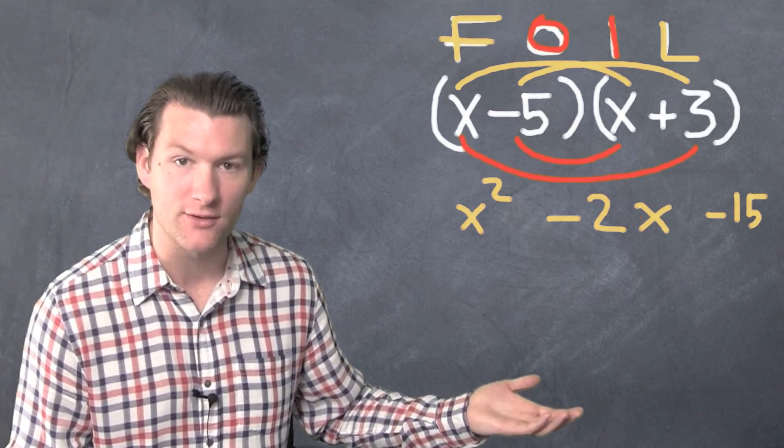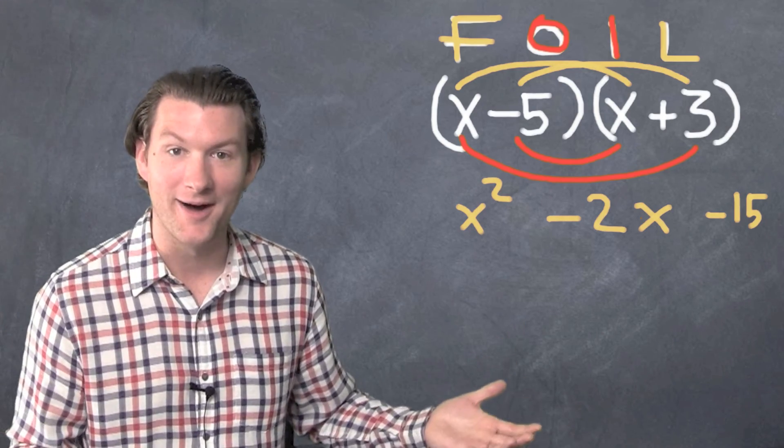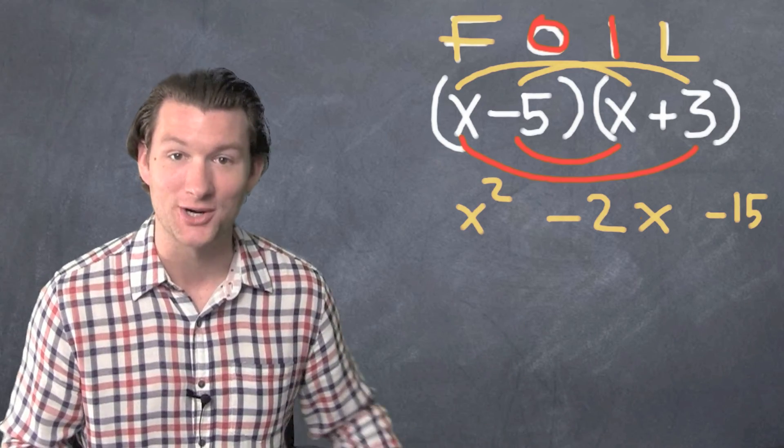We multiply those binomials together by foiling. I hope this is starting to make sense. Thank you.